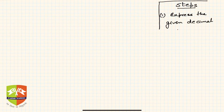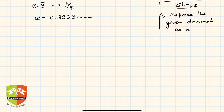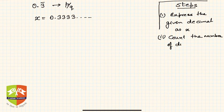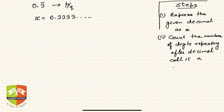Let's say we have to convert 0.3 bar into p by q form. Step 1: let x equal 0.3333... and so on. Step 2: count the number of digits repeating after the decimal. In this case, only one digit is repeating — which is 3 — so n equals 1.